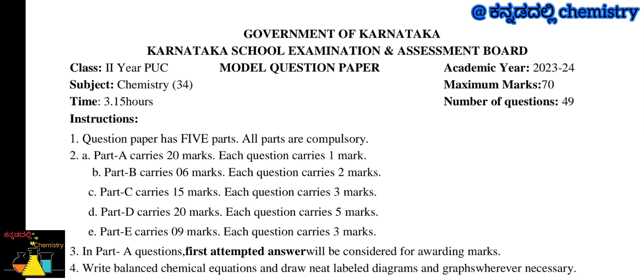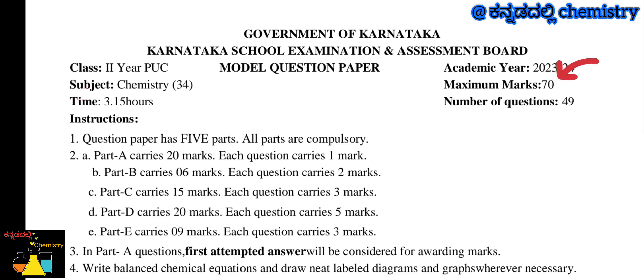This is the academic year 2023 and 2024. The Chemistry Board paper code is 34. The timing is 3 hours 15 minutes. The chemistry question paper is 100 marks total — the theory exam is 70 marks and the practical examination is 30 marks.